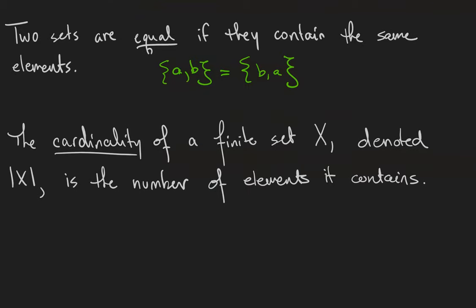And the cardinality of a finite set denoted with things that look like absolute value signs, even though they're not this time, is the number of elements it contains. So if X is the set ABC, then the cardinality of X is 3, because we have 1, 2, 3 elements of the set X.